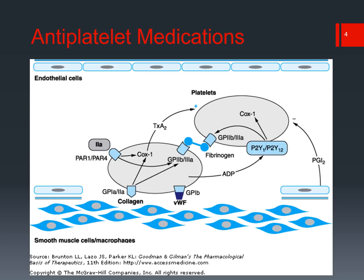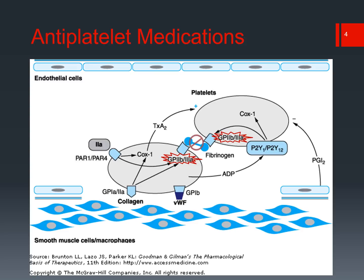Where do these work within the platelet plug? We have our COX-1 inhibitor, our anti-thromboxane drug — specifically aspirin — which will block thromboxane A2, thereby reducing the activation of neighboring platelets. We have ADP receptor antagonists, blocking the P2Y1 and P2Y12 receptors, which blocks the activation of neighboring platelets. We also have anti-aggregate drugs, the GP2B3A receptor antagonists, which antagonize those receptors and block the ability of platelets to aggregate together.